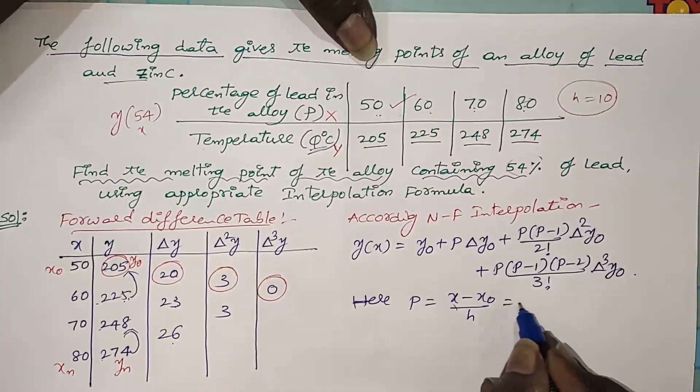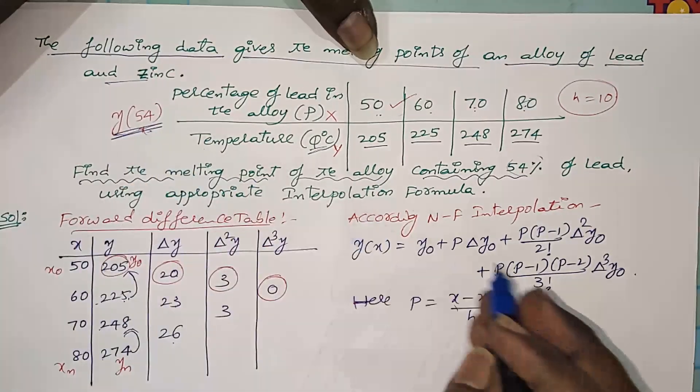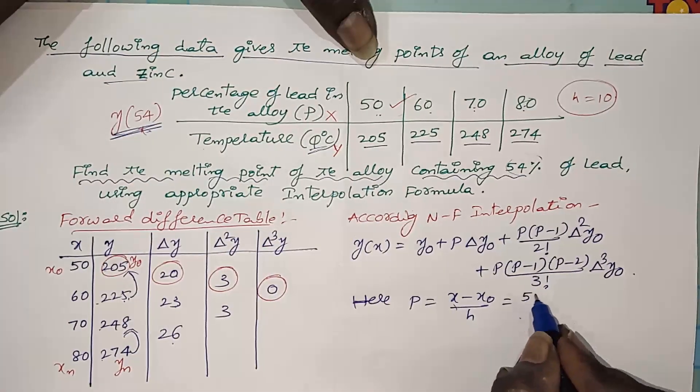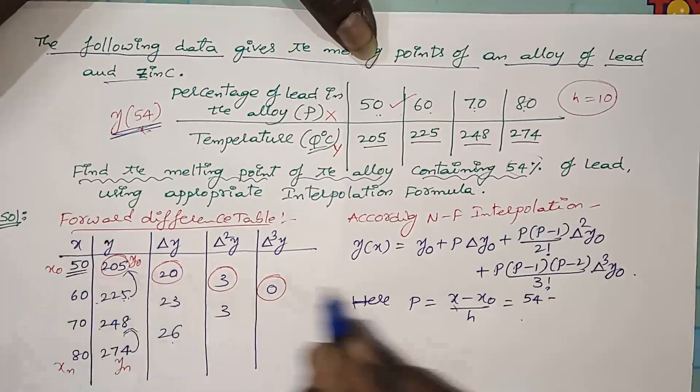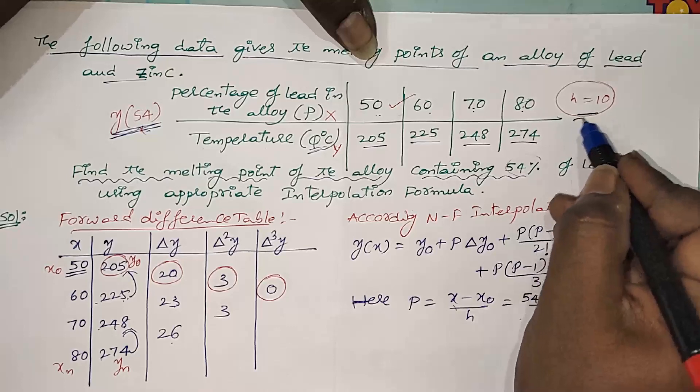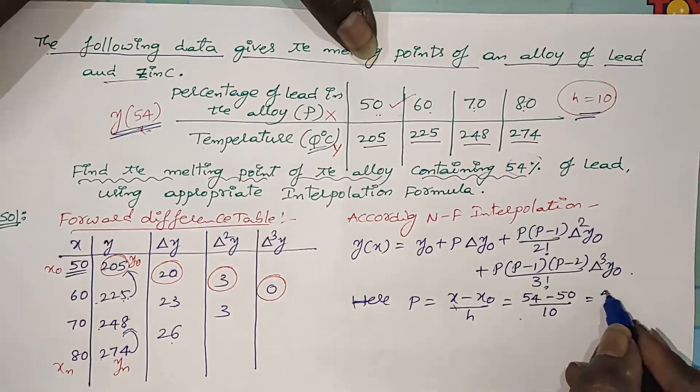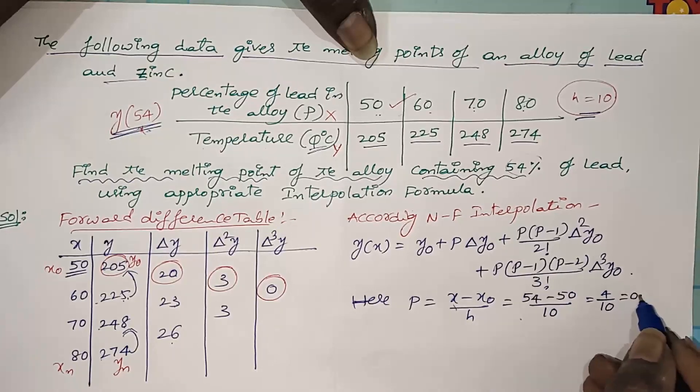We are going to find out Y of 54, so X = 54 minus X naught which is 50, by H which is 10. So 4 by 10 is 0.4.